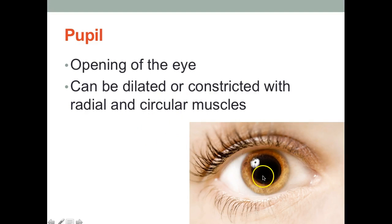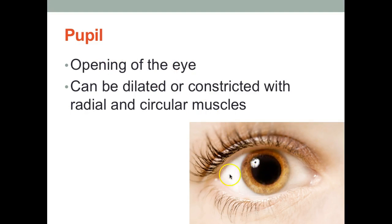The pupil can be dilated or constricted by the radial and circular muscles. So the pupil is basically the structure that allows light to enter the eye.